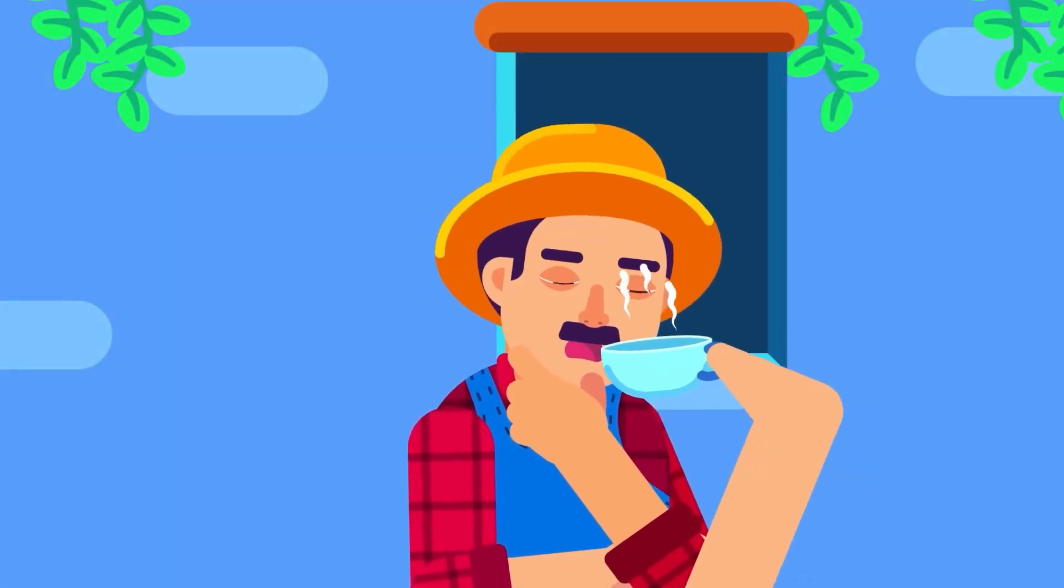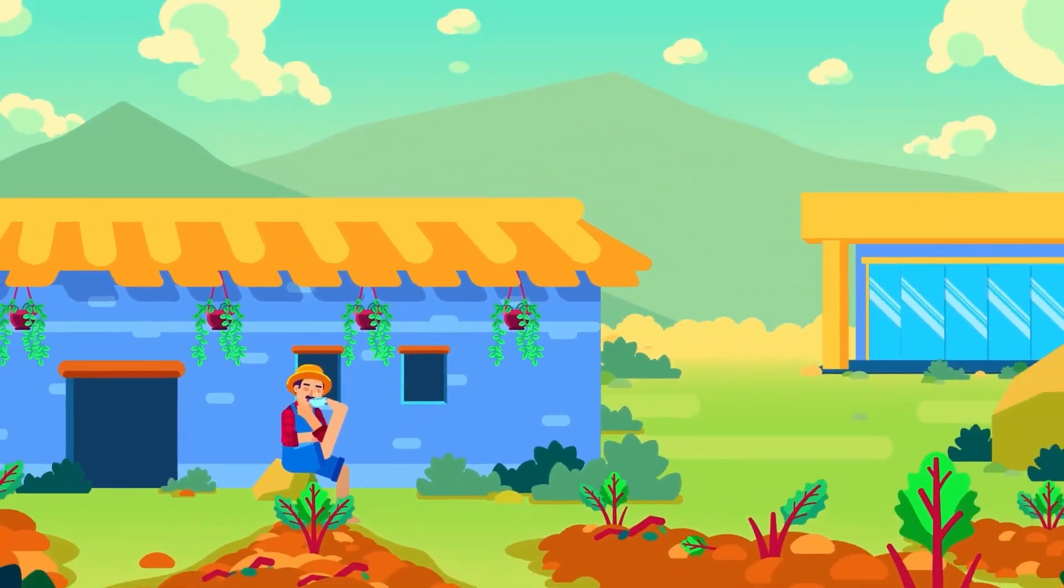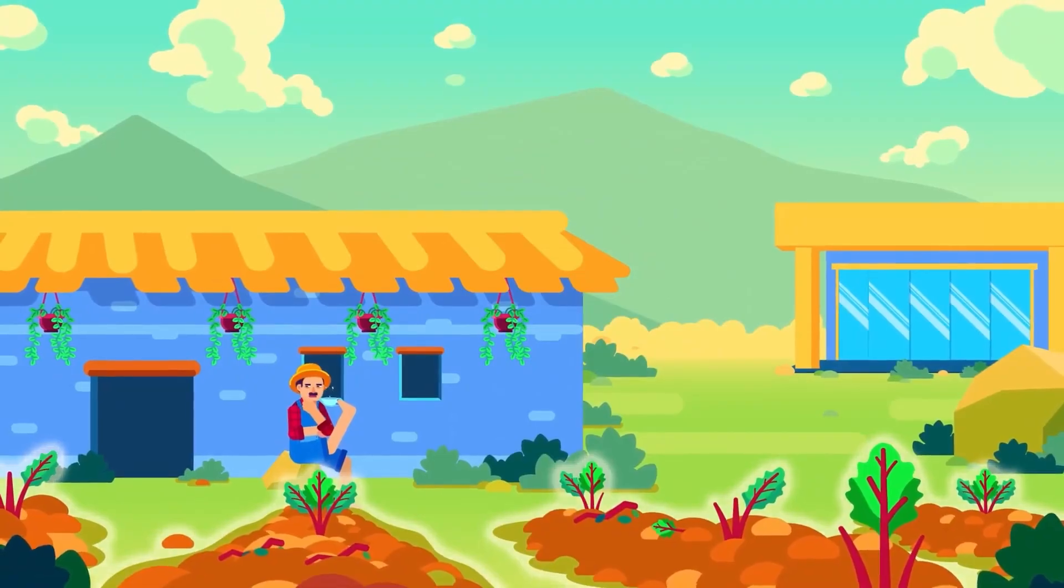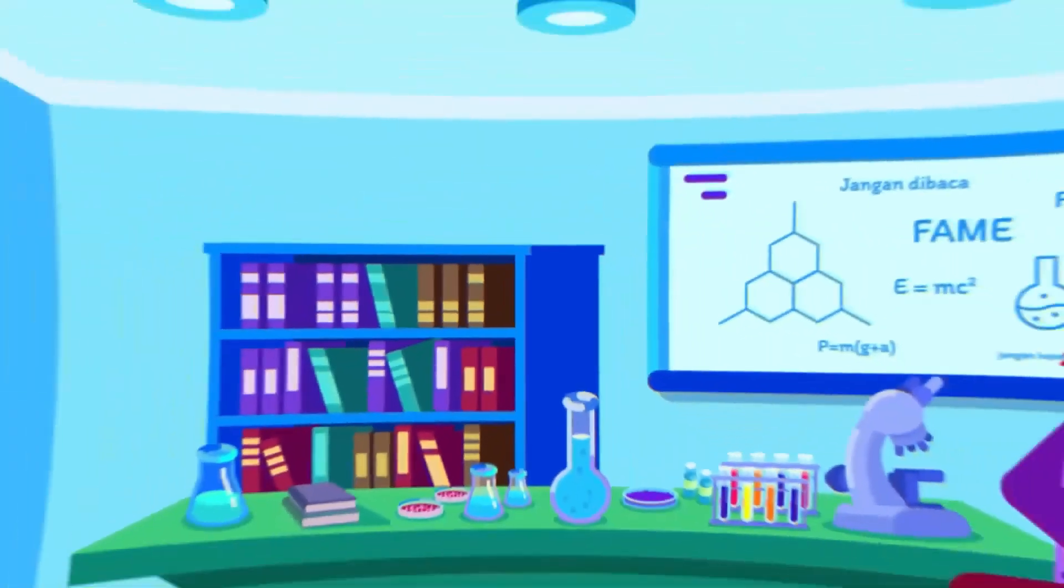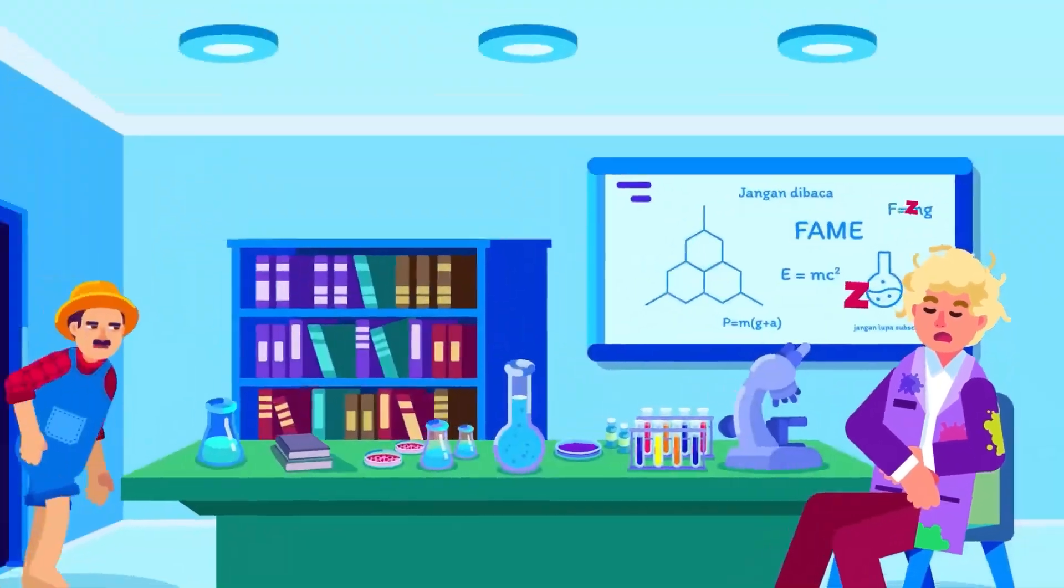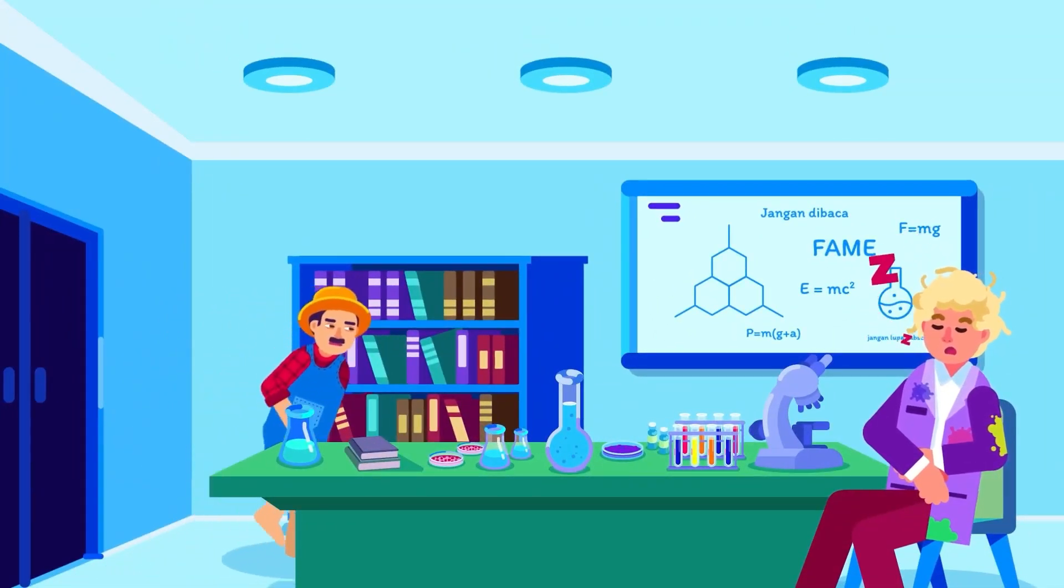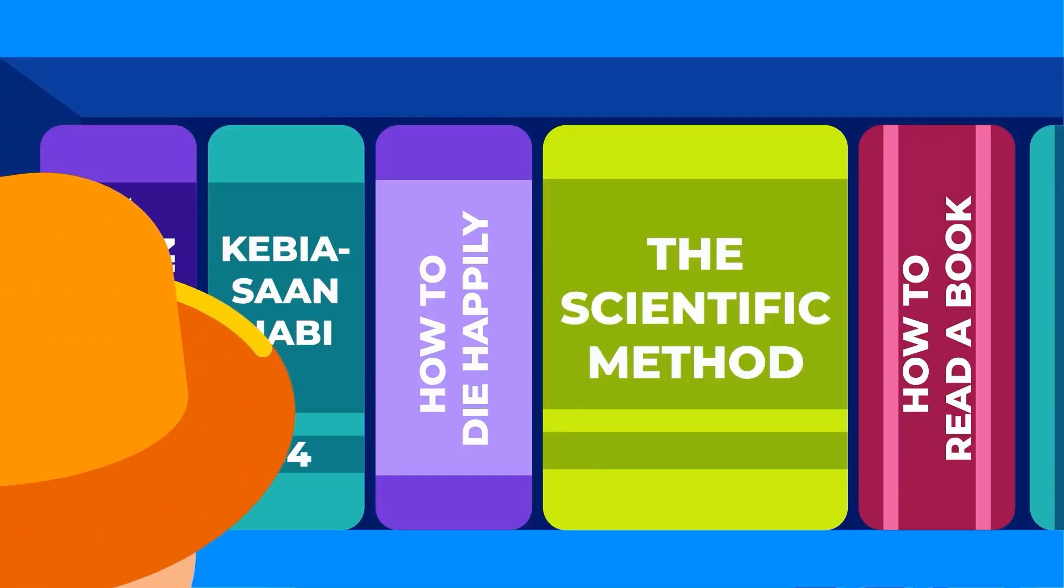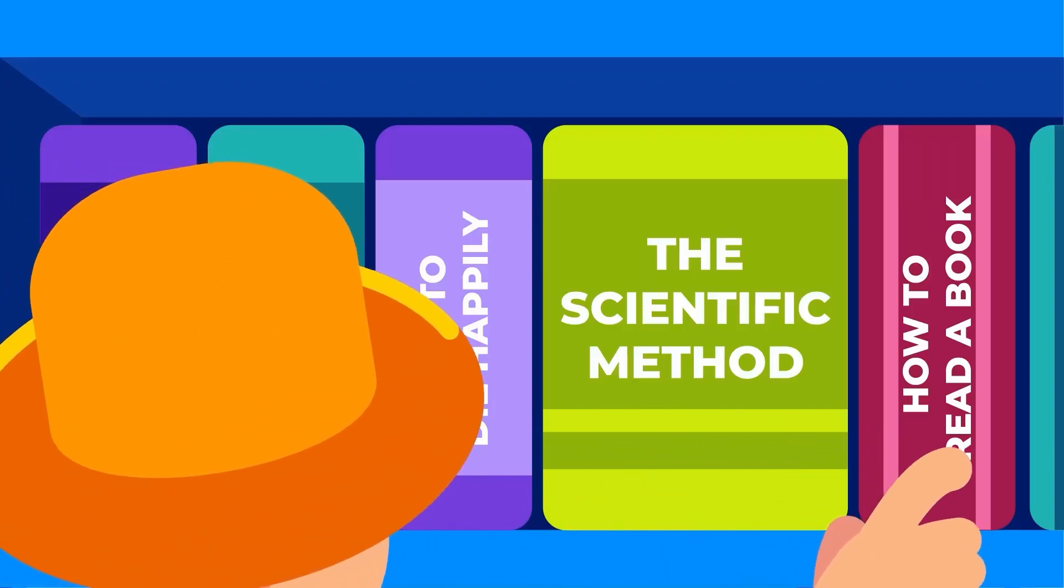Ever wondered how scientists solve problems? Can you apply their methods to find out the mystery of who's been destroying your garden at night? Well, the good news is, you don't need to be a wild-haired genius throwing random substances together to do that. In fact, scientists follow a systematic approach called the scientific method,